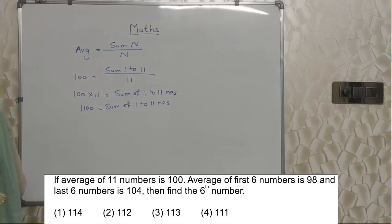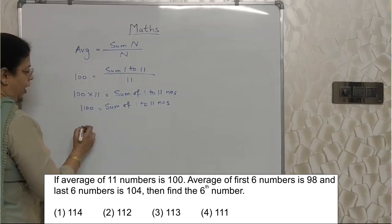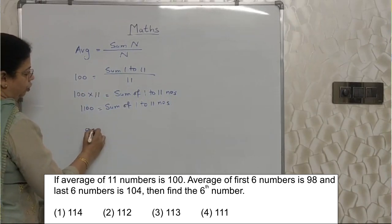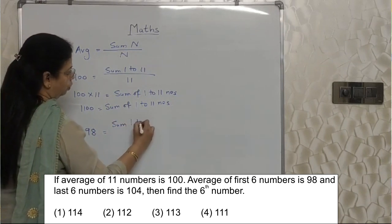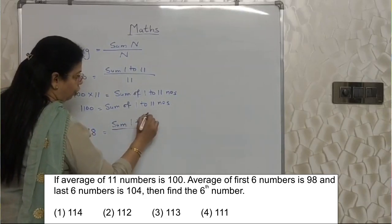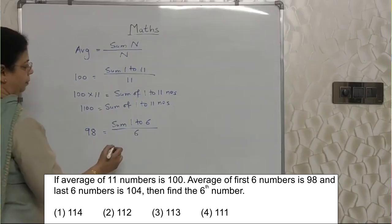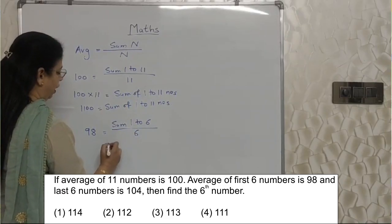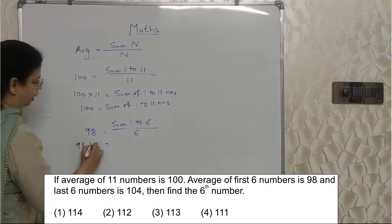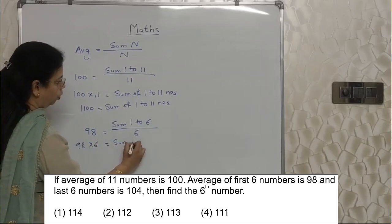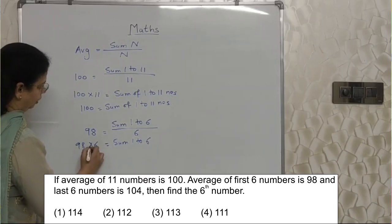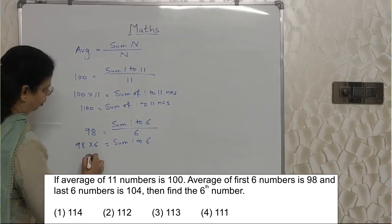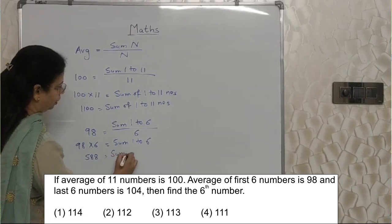Now they say the average of the first 6 numbers is 98. Using the same formula, 98 equals sum of first 6 numbers upon 6. So 98 into 6 gives the sum of numbers 1 to 6. That is: 6 eights are 48, 6 nines are 54, plus 4 equals 58. So the sum of the first 6 numbers is 588.